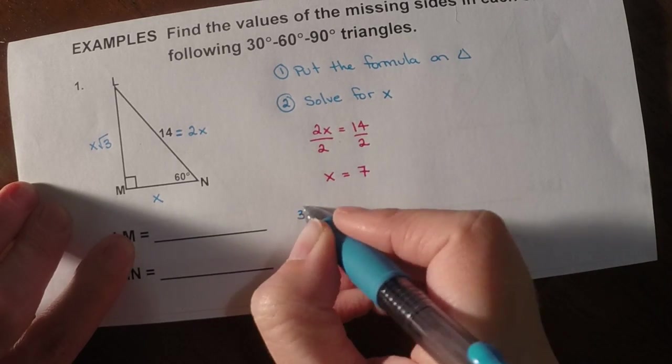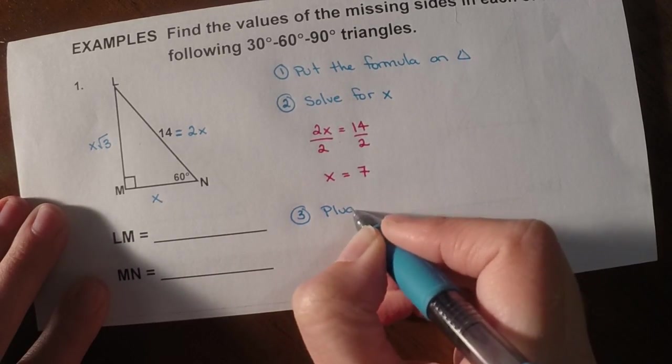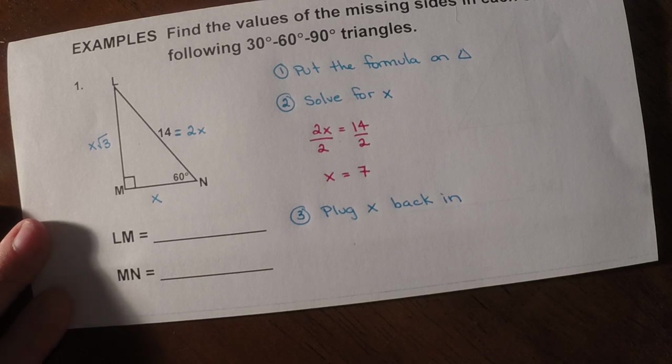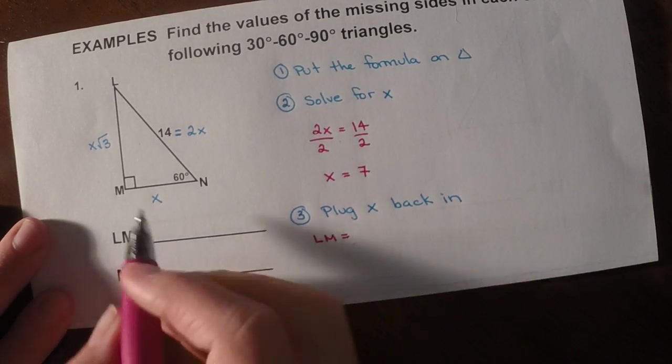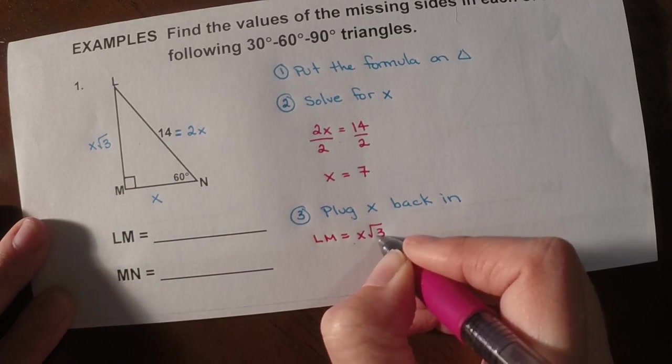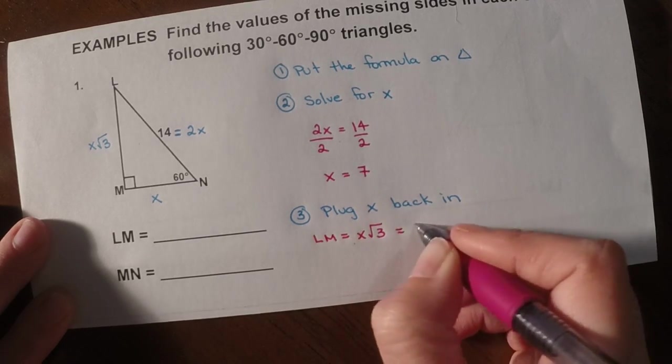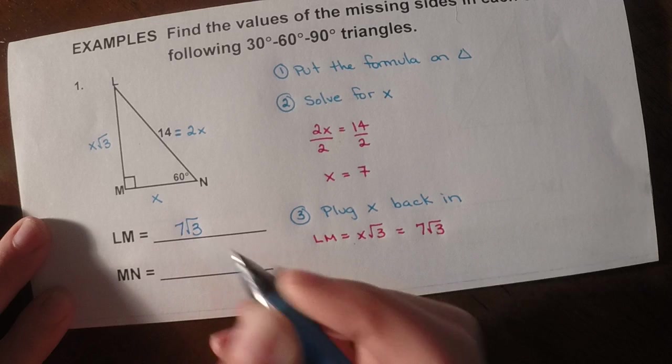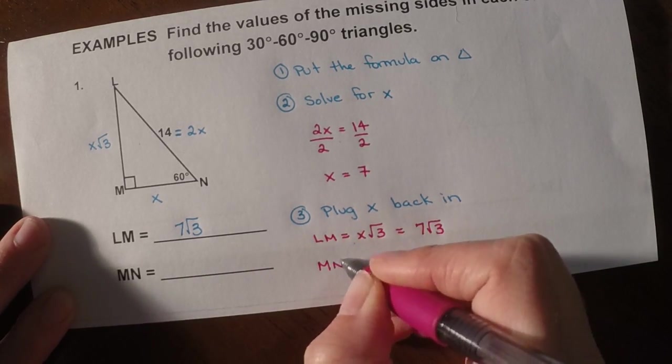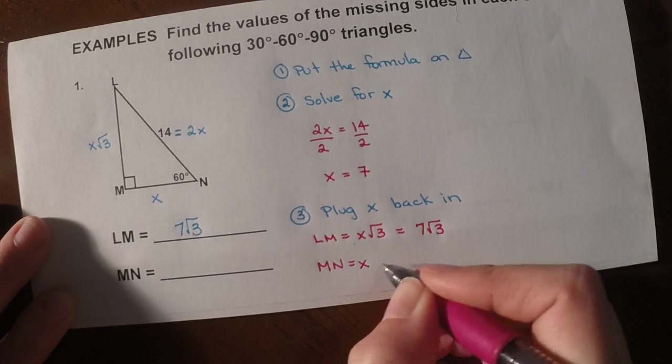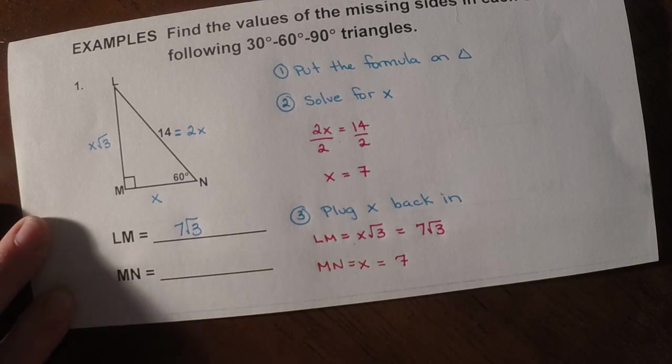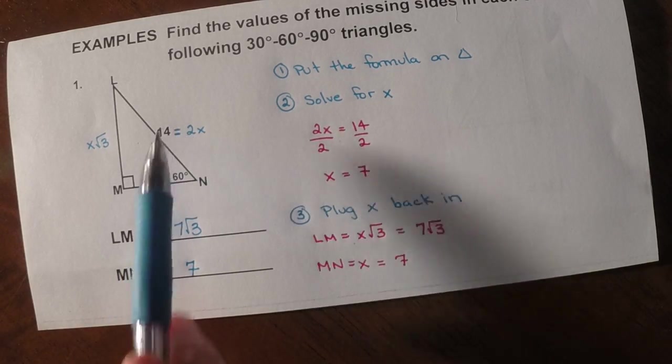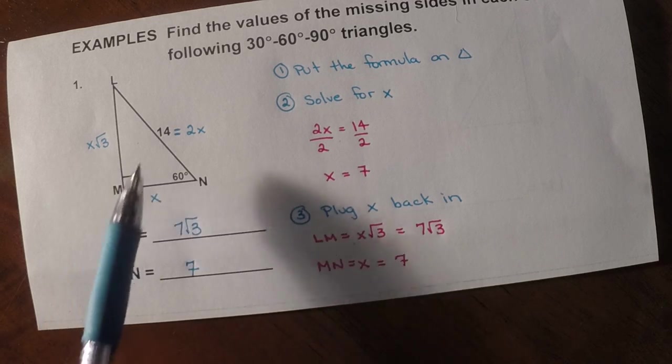So then the last step, step 3, was always to plug or substitute x back in, meaning we have to look at the sides that we are looking for. So the first thing they asked me for was LM. Well, LM, I've labeled x root 3. So I'm going to replace x with whatever I solved for. So this would be 7 root 3. And then MN is the second thing that they asked me for. MN is just equal to x. Well, x is just 7. So MN would be 7. So this triangle would be 7, 14, and 7 root 3, which matches our pattern, x, 2x, and x root 3.